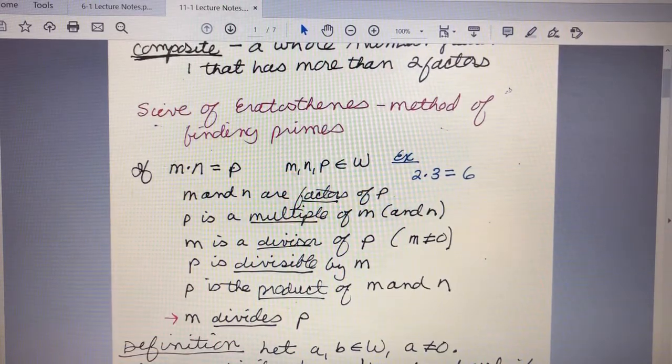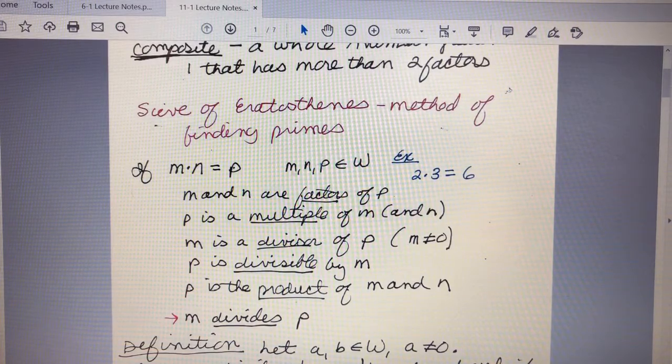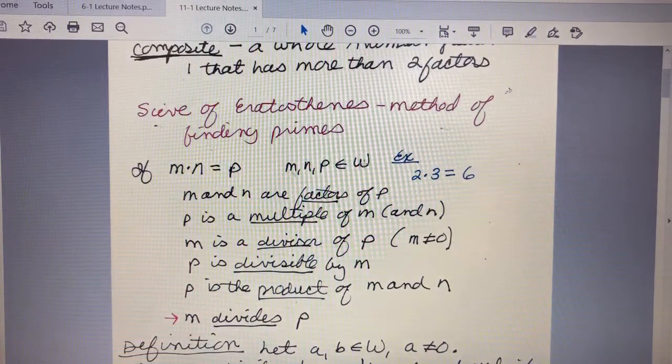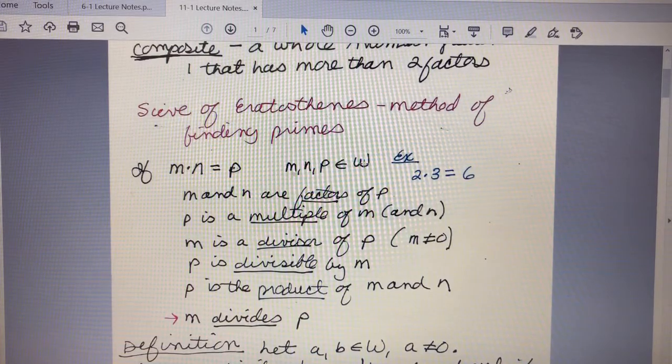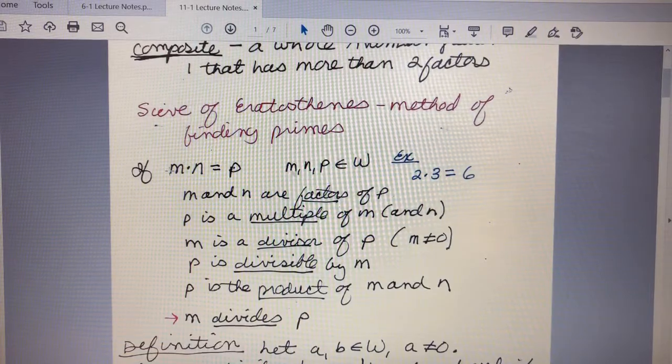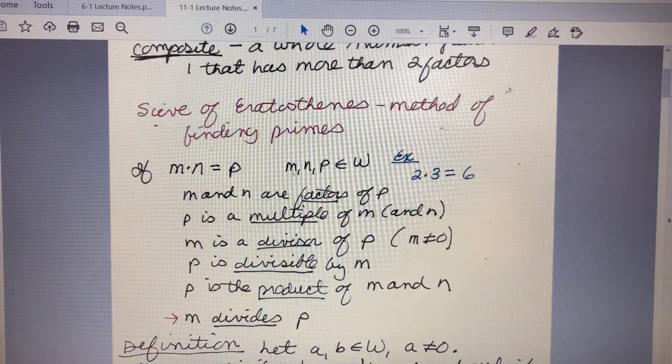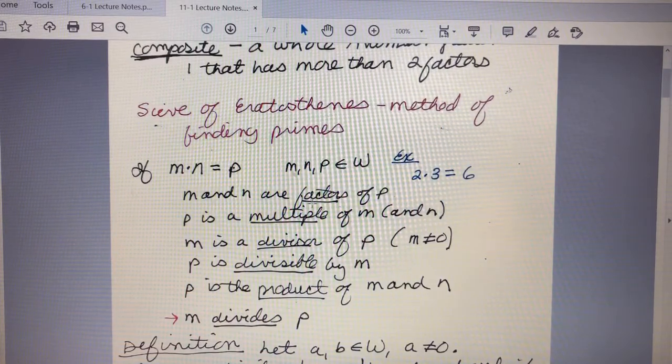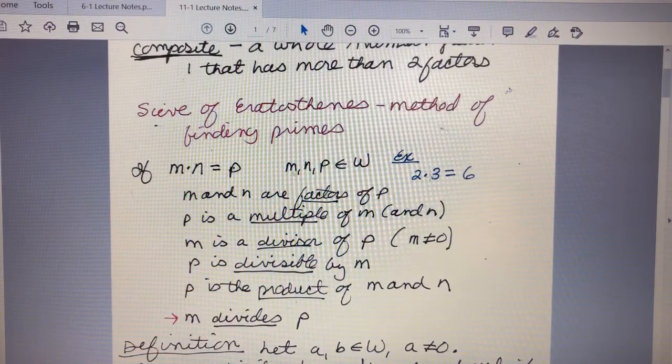Next up, some more vocabulary—we have talked about this before. If m times n equals some number p, where m, n, and p are all elements of the set of whole numbers—that symbol there means 'is an element of,' and W is the set of whole numbers. Remember, the whole numbers are 0, 1, 2, 3, 4, etc. So these two numbers multiply together to give you this number. Then we say m and n are both factors of p. Equivalently, p is a multiple of m, p is also a multiple of n.